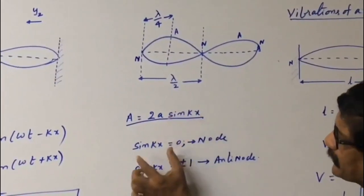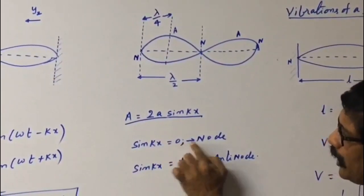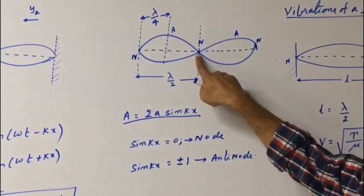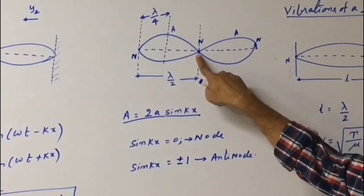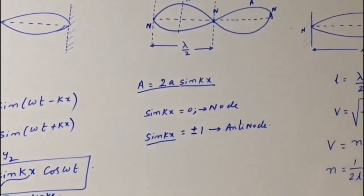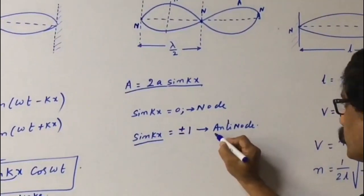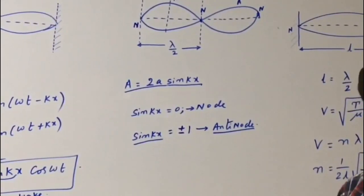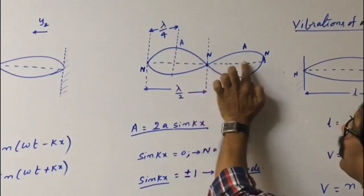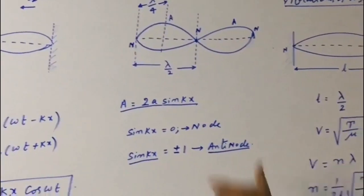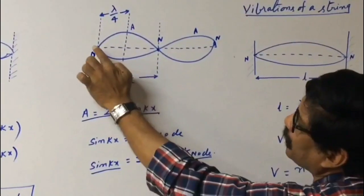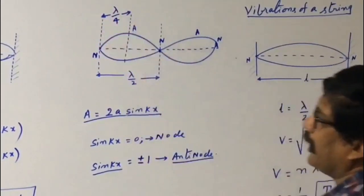When sin(kx) = 0, the amplitude is 0; that point is called a node. Node is the point where the amplitude is 0. At places where sin(kx) = ±1, the amplitude is maximum; those points are called antinodes. The distance between two successive nodes is λ/2, and the distance between a node and an antinode is λ/4.